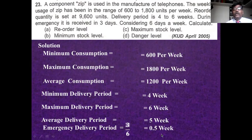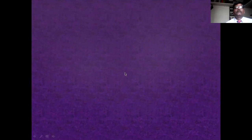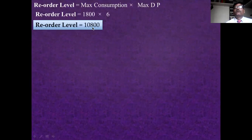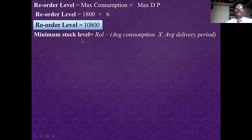Confirm all time units match. Then: ROL = maximum consumption × maximum delivery period = 1,800 × 6 = 10,800 units. This is the reorder level. Minimum stock level = ROL − (average consumption × average delivery period).